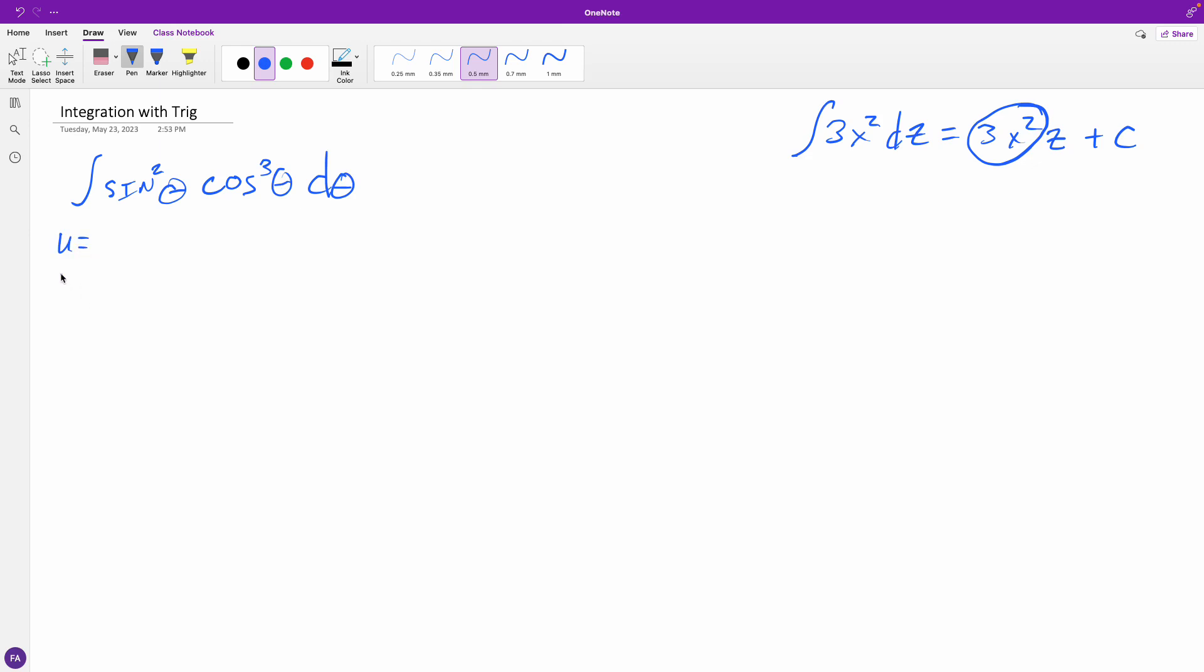So let's let u equal cosine cubed theta, which means that du is equal to 3 sine theta cosine squared theta. Well, we don't have all that up there. It doesn't give us the sine squared, and it actually has too many cosines, so that's not going to work.